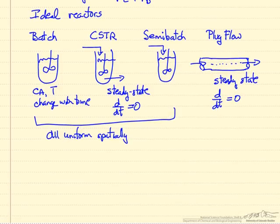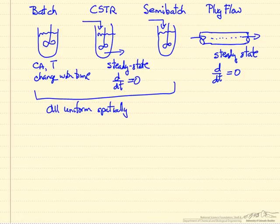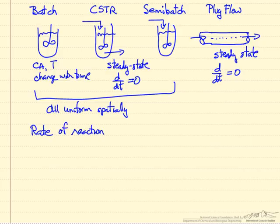When we do these mass and energy balances, one of the critical terms that we're going to use is the rate of reaction. For component A, this is the most common form, defined as the rate of formation of component A, and this means it has sign notation.